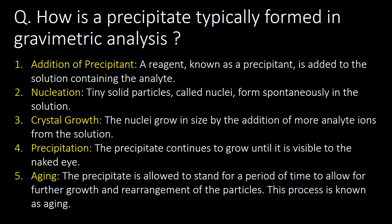How is a precipitate typically formed in gravimetric analysis? A precipitate is typically formed by addition of a precipitant, nucleation, crystal growth, precipitation, or by aging.